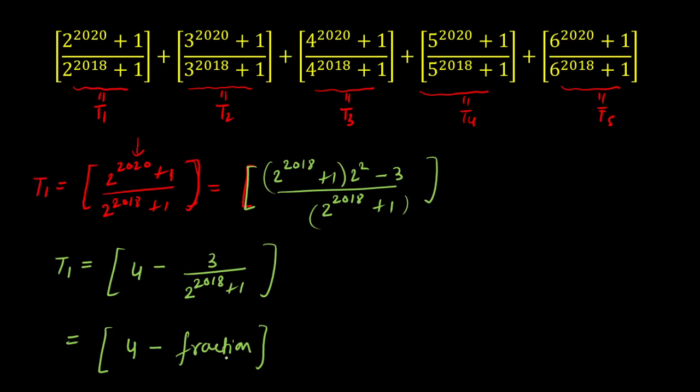In a similar manner, I got T1 = 3. Now I can solve for T2. The only difference is the base is changing. Taking 3² common, I get 9 minus a fractional value, which gives T2 = 8.